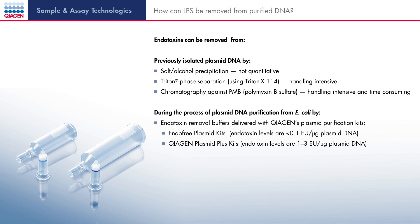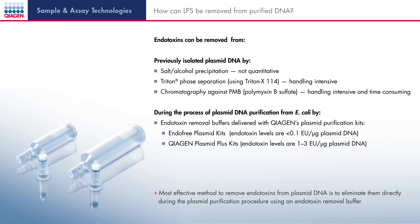From what we have learnt, endotoxins have to be removed from plasmid DNA to guarantee optimal results. There are two ways to do this: removal of endotoxins after DNA purification, and removal during DNA purification. If the DNA is already prepared, there are three very common methods used to remove endotoxins. Salt-alcohol precipitation of DNA from solution removes salt, guanidine, and endotoxins. This is not a quantitative method but may be sufficient to improve transfection, especially for cells that are not extremely sensitive to endotoxins.